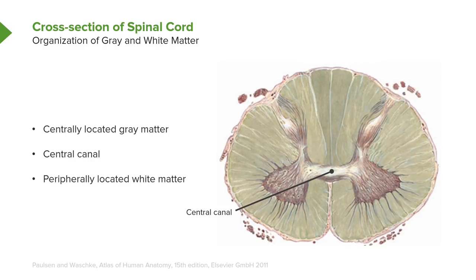Ascending and descending tracts are traveling in these peripheral areas, whereas nerve cell bodies are housed in the gray matter. So white matter is peripheral and gray is internal in the spinal cord. This is just the opposite of how it's organized in the brain, where gray matter is found peripherally and white matter is found more deeply within the brain.